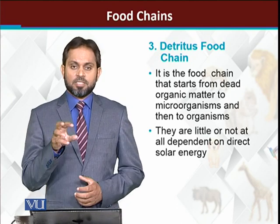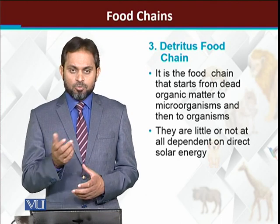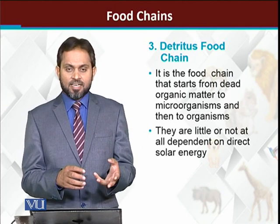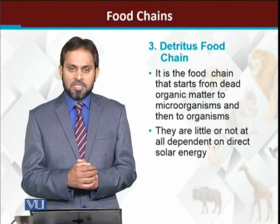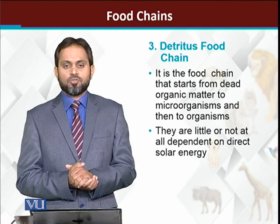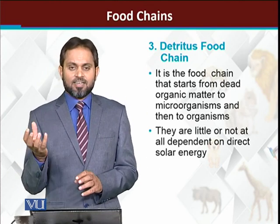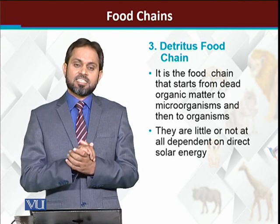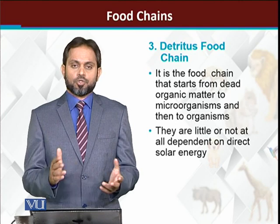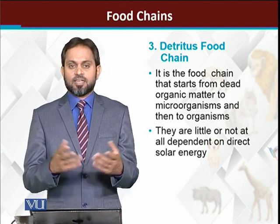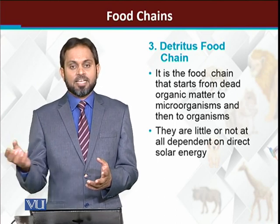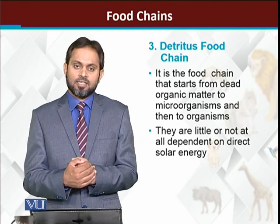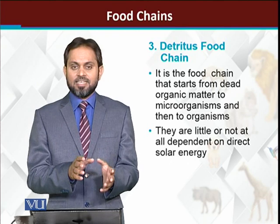For example, in simple words: decaying material has bacteria on it, many protozoa eat those bacteria, many larvae eat those protozoans, and then larger fish or other organisms eat those larvae — forming a proper sequence. Even mushrooms represent a detritus food chain that reaches humans: mushrooms are fungi that utilize decaying material in the soil, and humans then use mushrooms as food.